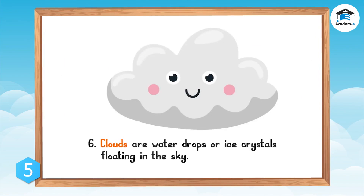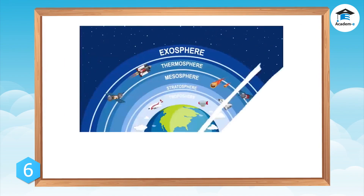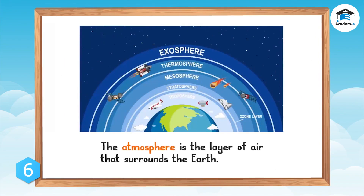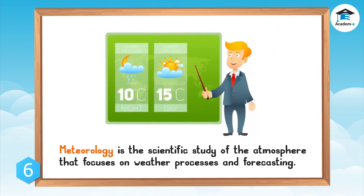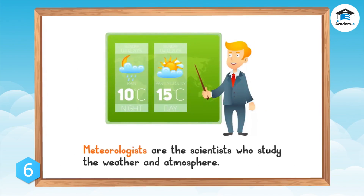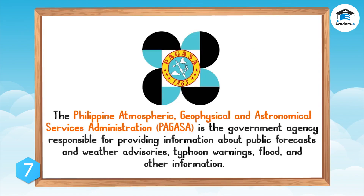Clouds are water drops or ice crystals floating in the sky. The atmosphere is the layer of air that surrounds the earth. Meteorology is the scientific study of the atmosphere that focuses on weather processes and forecasting. Meteorologists are the scientists who study the weather and atmosphere. The Philippine Atmospheric, Geophysical and Astronomical Services Administration (PAGASA) is the government agency responsible for providing public forecasts, weather advisories, typhoon warnings, flood information, and other related information.